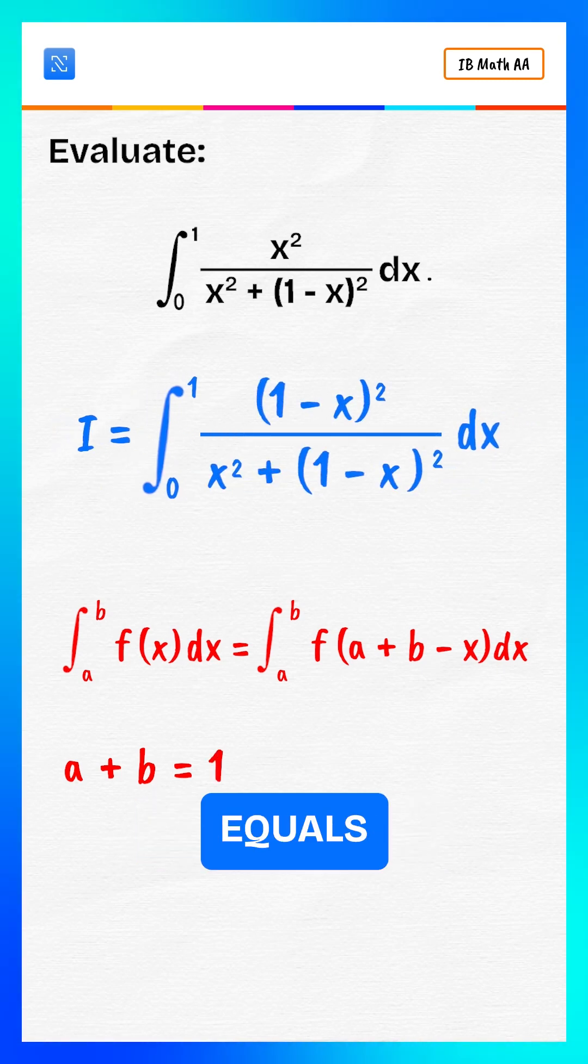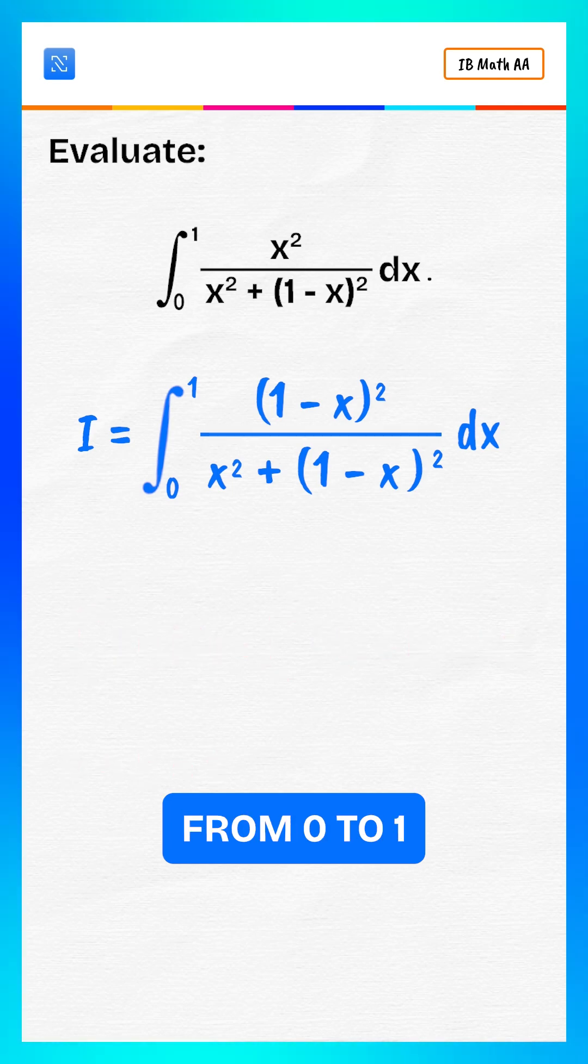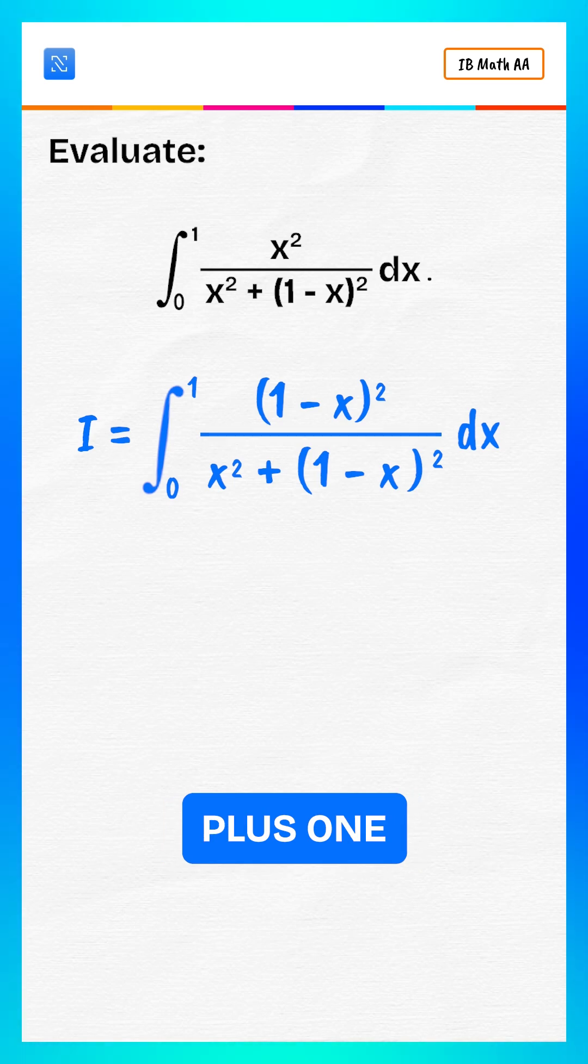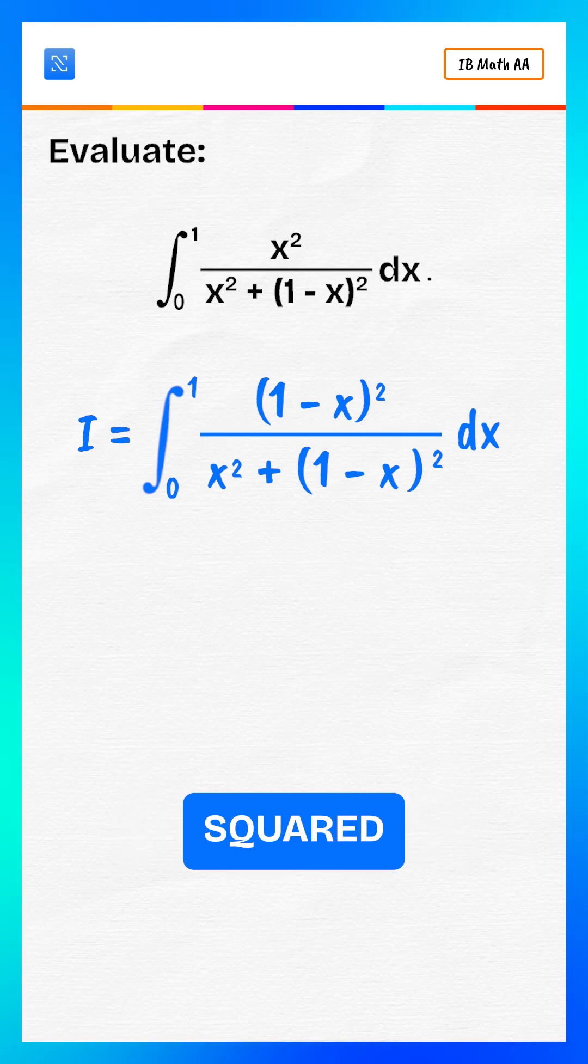Then i also equals integral from zero to one of one minus x whole squared divided by x squared plus one minus x whole squared, dx.